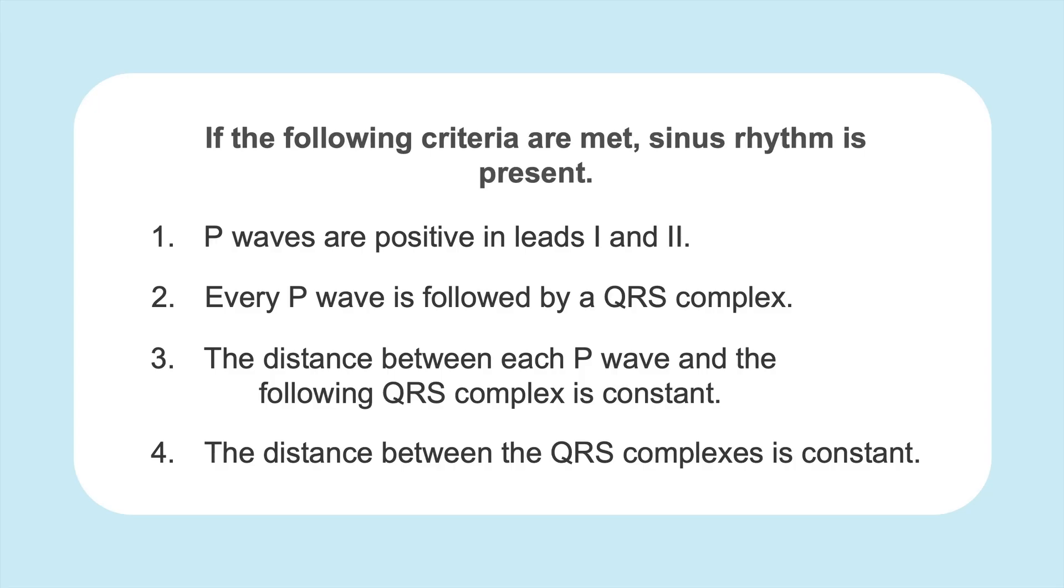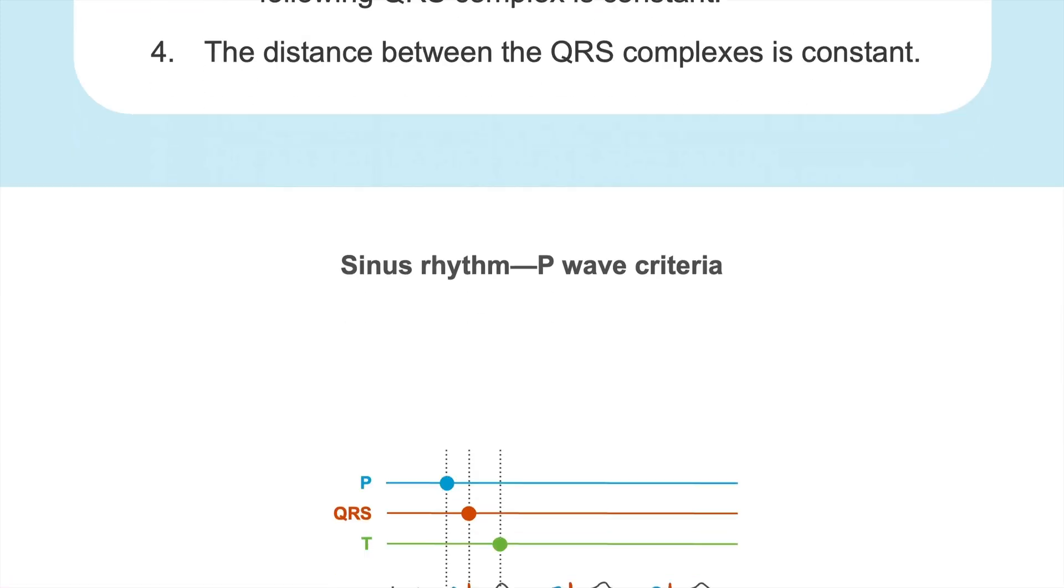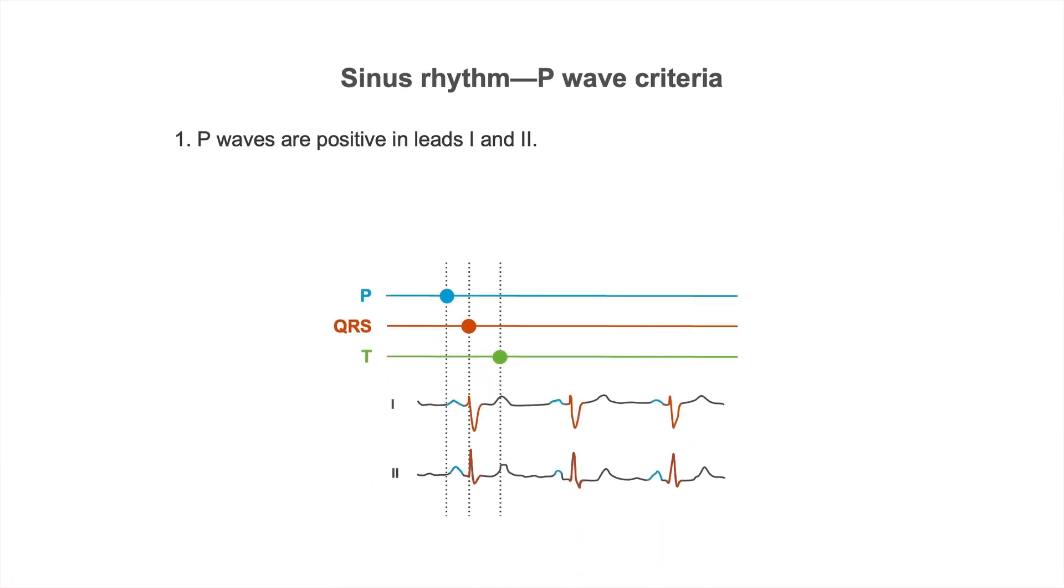As we know, they're essential to diagnosing sinus rhythm. So we said that P waves are positive in leads 1 and 2 in sinus rhythm. Let's check. They're positive in lead 1 and also in lead 2 here. Criteria number 2 says that every P wave is followed by a QRS complex, and that's definitely the case here.